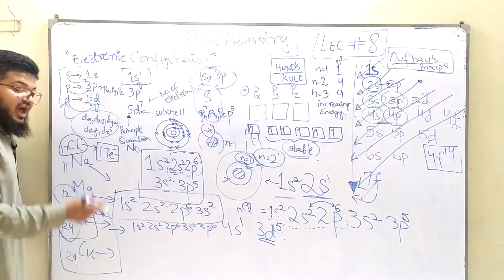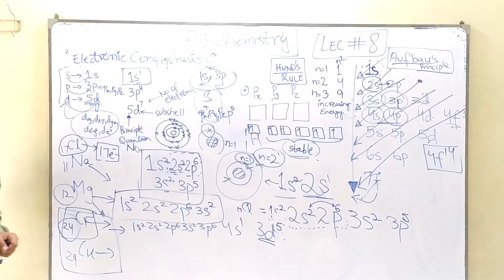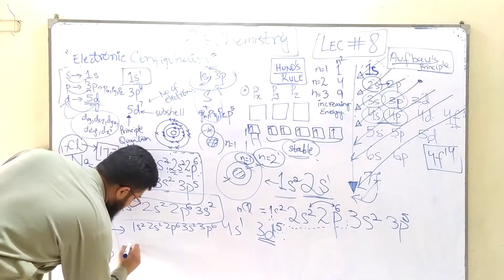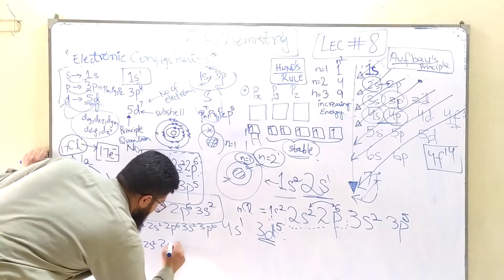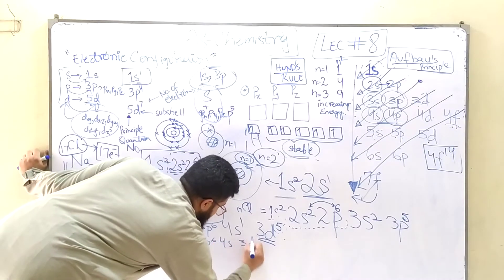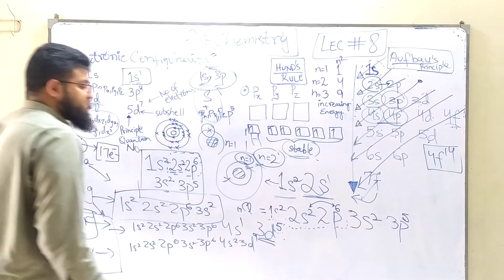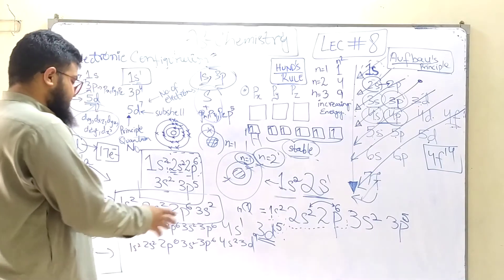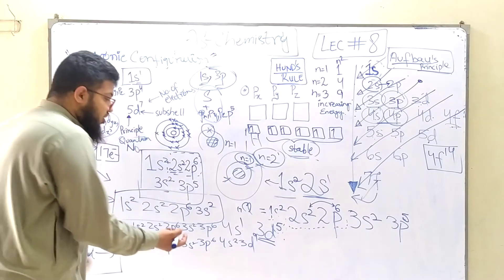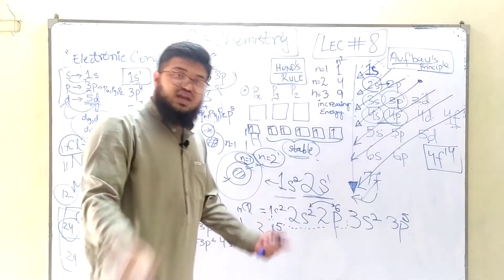Chromium is one exception, and we also have a second exception to the Aufbau principle: copper. Its proton number is 29, so it has 29 electrons. Let's add in the 29 electrons: 1s2, 2s2, 2p6, 3s2, 3p6, then 4s and 3d. In the case of copper, according to the Aufbau principle, it should be 4s2 and 3d9, because if you count this up it totals 29. According to the Aufbau principle, the 4s needs to be filled first before we go on to the 3d orbital.